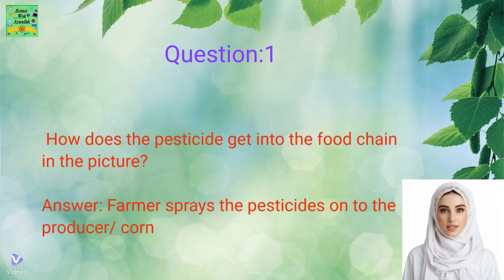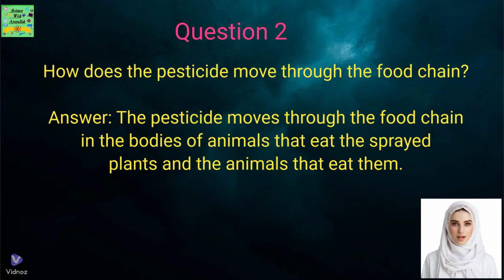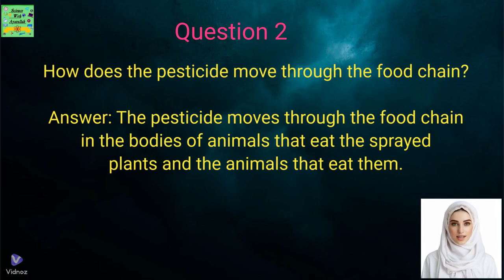Question 1: How does the pesticide get into the food chain in the picture? Answer: The farmer sprays the pesticide onto the producer. Question 2: How does the pesticide move through the food chain? Answer: The pesticide moves through the food chain in the bodies of animals that eat the sprayed plants, and the animals that eat them.